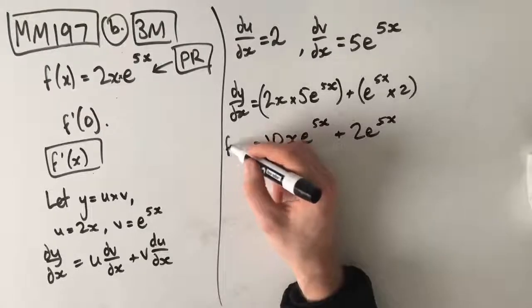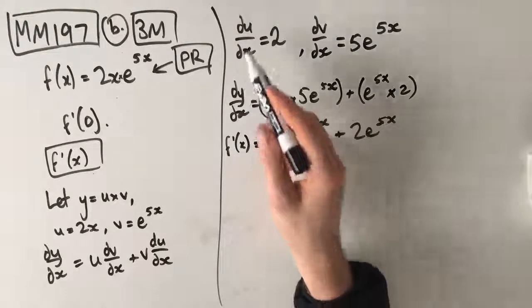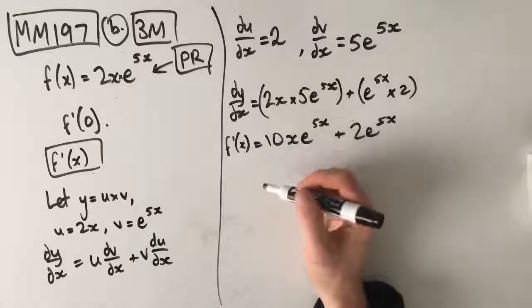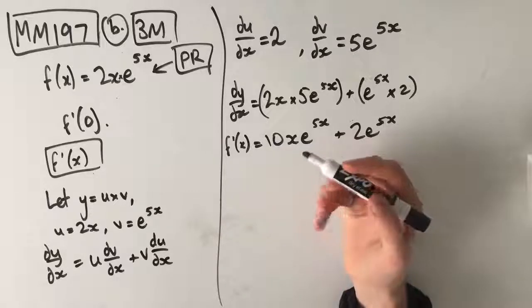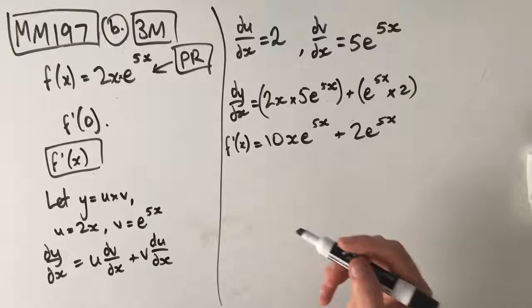So, that is our f dash of x. I just like to use dy dx throughout the working because it's kind of easier to see the derivatives and stuff. But then, once you get down here, you need to write f dash of x again because the answer is given in f dash of 0 and the question says f of x.